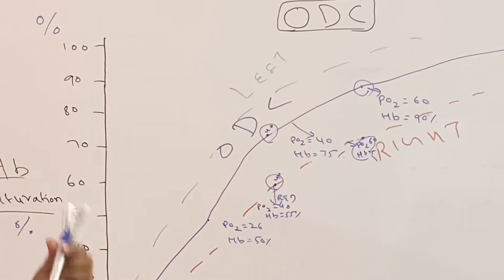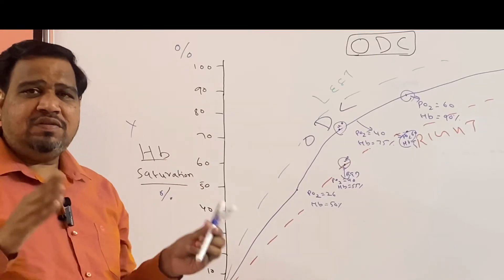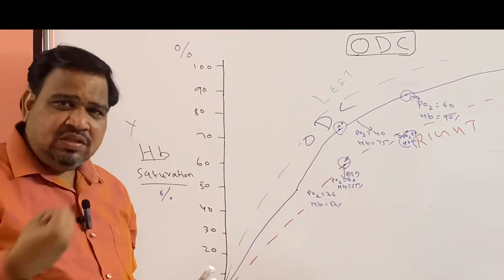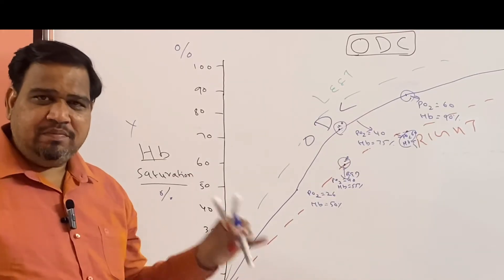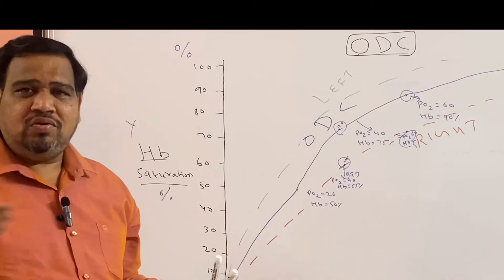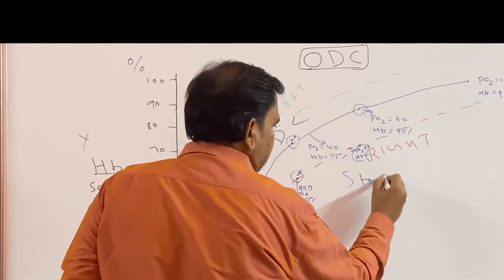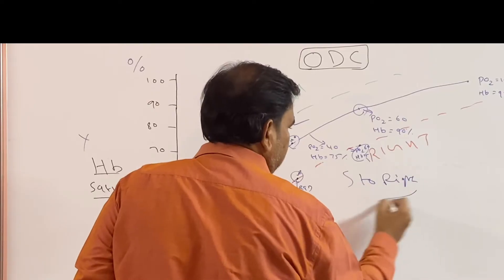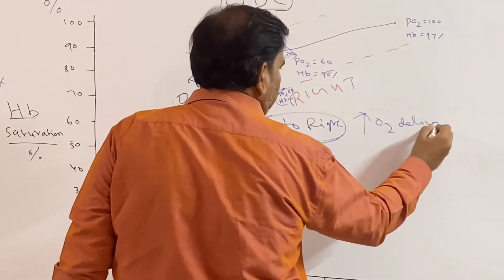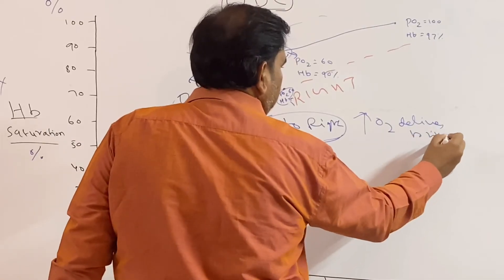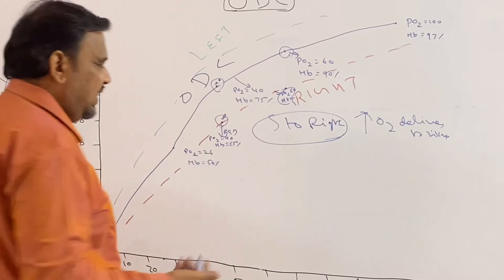When the curve shifts to right, hemoglobin saturation decreases, meaning hemoglobin's binding affinity for oxygen decreases — there is dissociation of oxygen from hemoglobin. This means more oxygen is delivered to the tissues. So shift to right equals increased oxygen delivery to tissues.